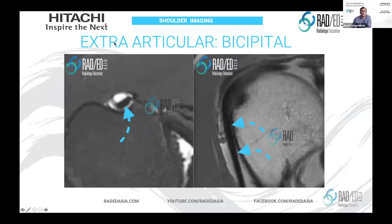The third part is the extra-articular portion, which is really assessed best on the axial scan. This is an axial image cutting through the tendon, and you see it really nicely. You can at times see it well on the coronal images as well, but I wouldn't rely on those for signal — it's the axial images that you want to look at.